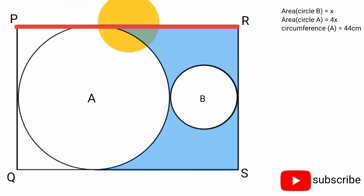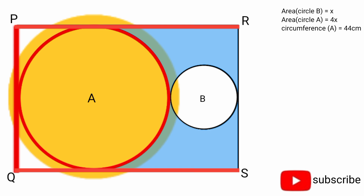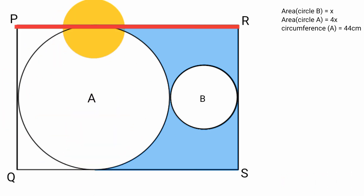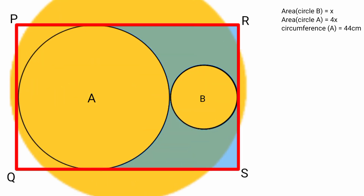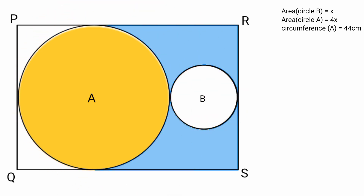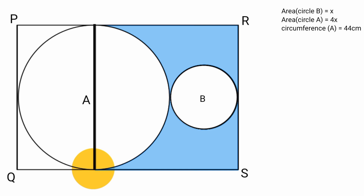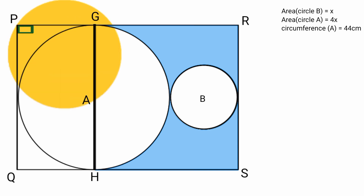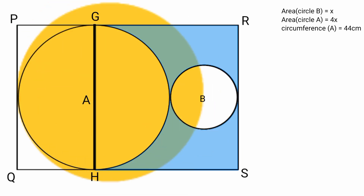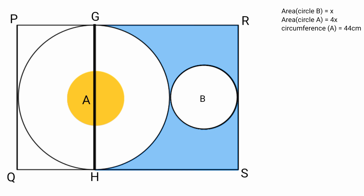Lines PR and QS and line PQ are tangent to circle A. Lines PR and QS are parallel to each other because PQRS is a rectangle. We can draw a line from this point to this point, parallel to line PQ — label this point G and this point H. This is a right angle because PQRS is a rectangle. Any straight line segment that touches two parallel tangents of a circle at the points where the tangents touch the circle is a diameter, and hence line GH is a diameter of circle A.